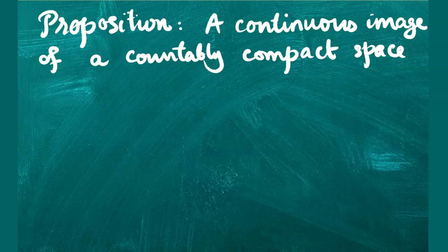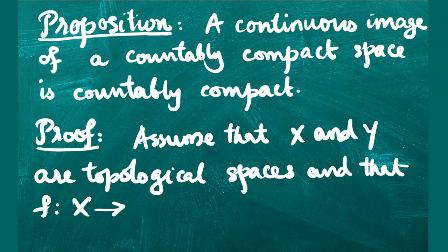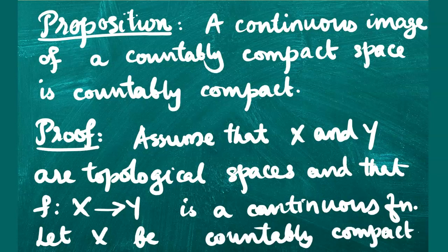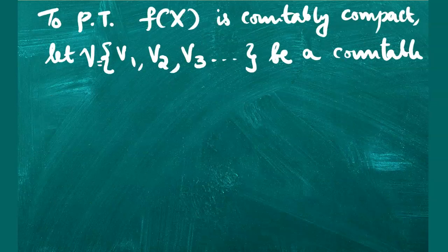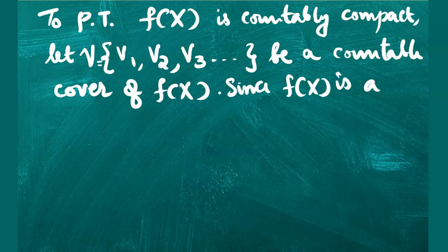Proposition: the continuous image of a countably compact space is countably compact. Assume that X and Y are topological spaces and that f from X to Y is a continuous function. Let X be a countably compact space. We need to prove that the image of X under f is also countably compact, i.e., f(X) is countably compact.